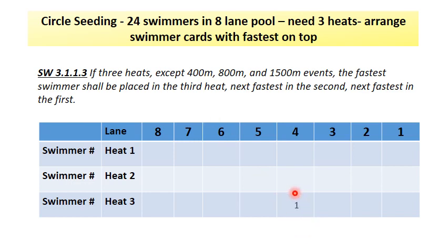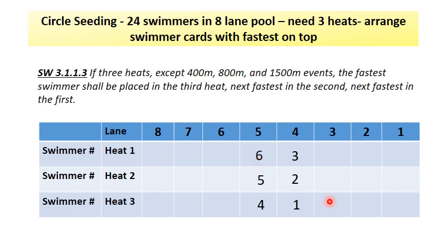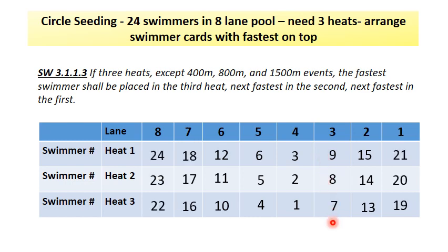Begin with lane four. The fastest three swimmers are seated beginning with heat three lane four, heat two lane four, and then heat one lane four. Move to the left in lane five and seed the next three fastest swimmers in heats three, two, and one. Move to the right of the fastest swimmer to lane three and seed the next three fastest swimmers into heats three, two, and one. Continue alternating left and right until all swimmers are seated.